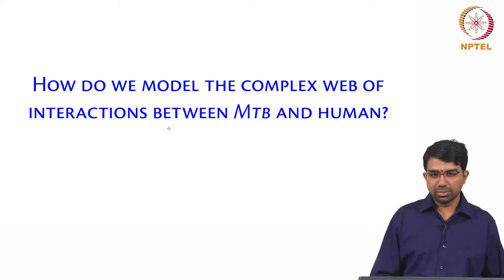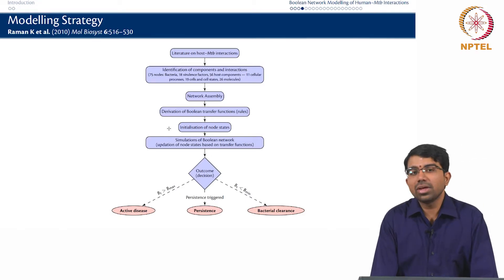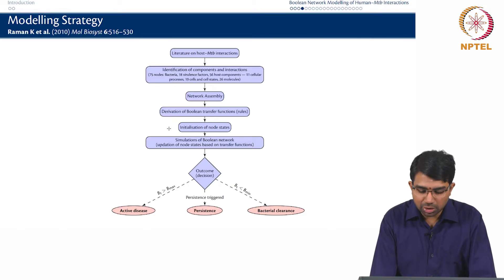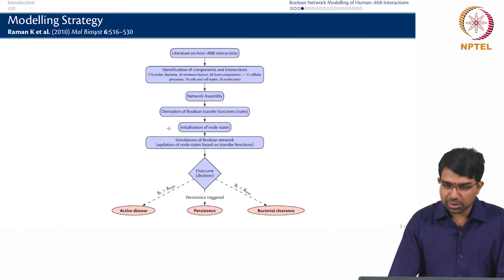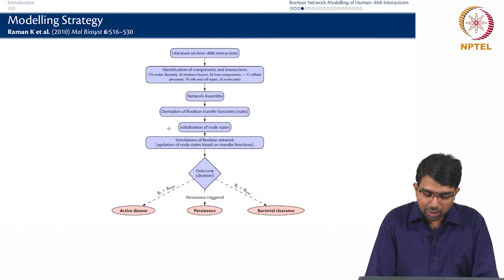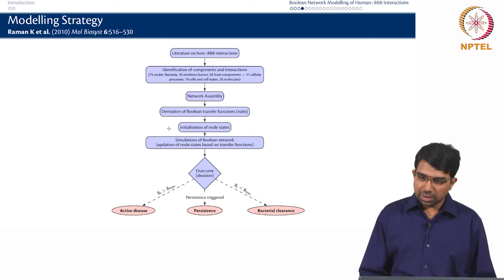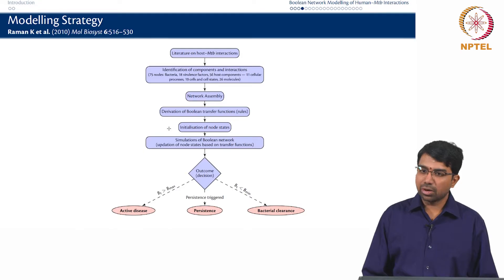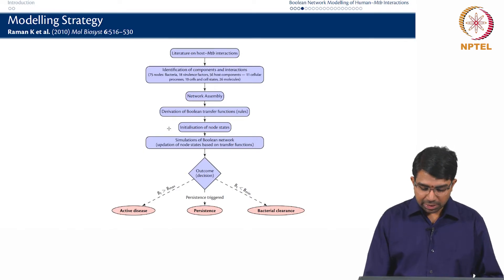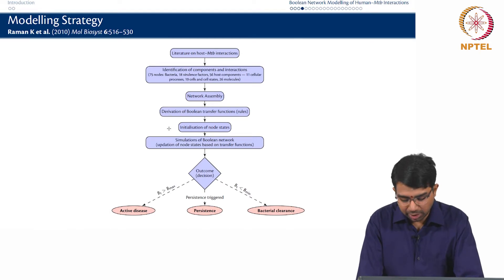So how can we model the complex web of interactions that exist between TB and the human host — essentially bacterial metabolism and signaling versus the human immune system? This was the strategy we adopted. We built these models from literature, going through a lot of published work on host-Mycobacterium tuberculosis interactions to identify several components and interactions. We came up with 75 nodes including bacteria, 18 virulence factors, 56 host components including 11 cellular processes, 26 molecules, and 19 cells and cell states — for example T cells and activated T cells, B cells and activated B cells. We then build a network and identify all the Boolean transfer functions as discussed in the previous class, initialize the node states, and simulate the network.